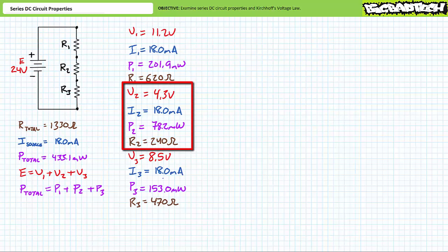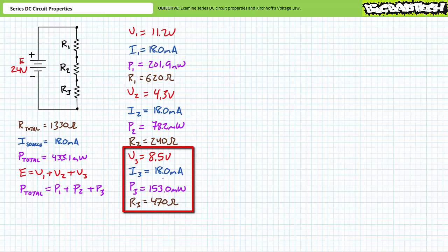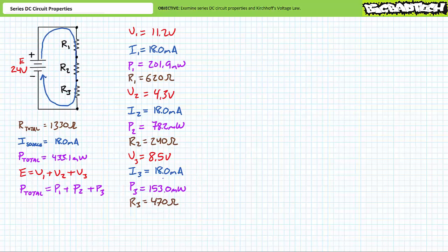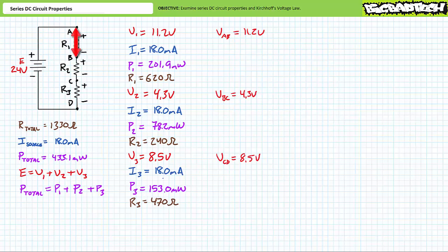R1, a 620 ohm resistor, experiences roughly 18 milliamps of current, an 11.2 volt drop, and dissipates roughly 201.9 milliwatts of power. R2, a 240 ohm resistor, experiences roughly 18 milliamps of current, a 4.3 volt drop, and dissipates roughly 78.2 milliwatts of power. R3, a 470 ohm resistor, experiences roughly 18 milliamps of current, an 8.5 volt drop, and dissipates 153 milliwatts of power. Given conventional current travels clockwise, the voltage drops across each resistor would be oriented positive to negative, top to bottom. Let's add lettered nodes A, B, C, and D to this circuit.